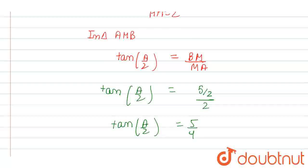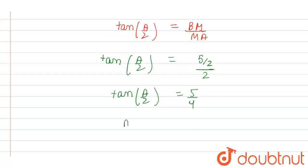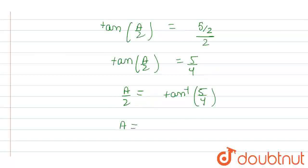But in the question, we need to find angle A. So A/2 = tan⁻¹(5/4), which gives us A = 2 tan⁻¹(5/4).